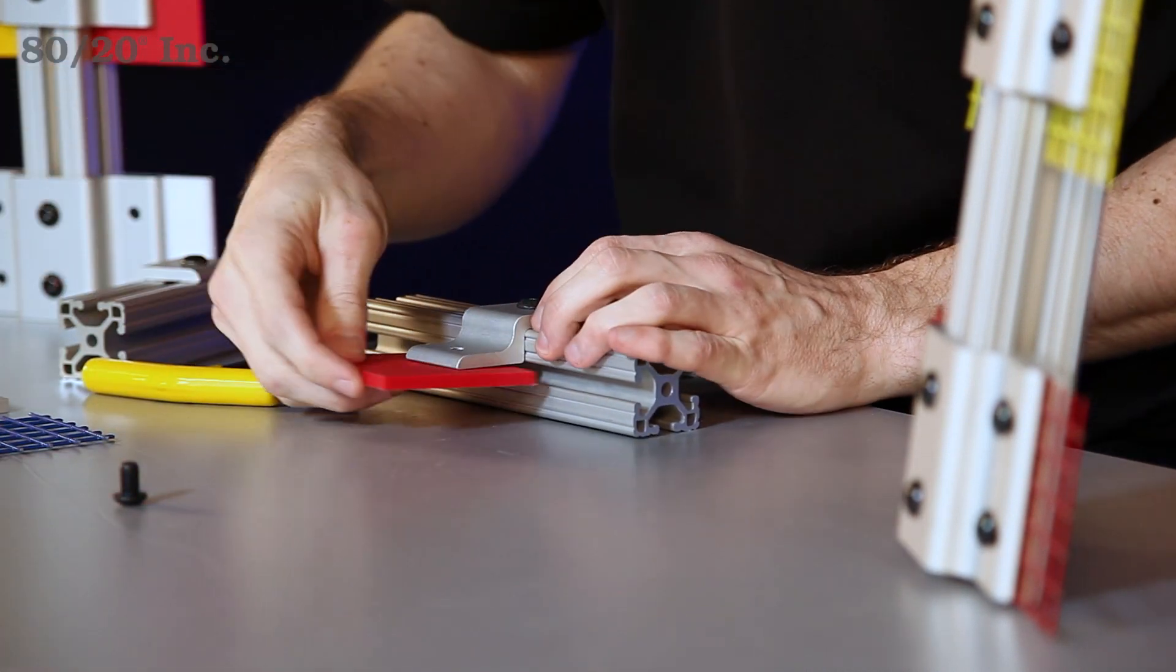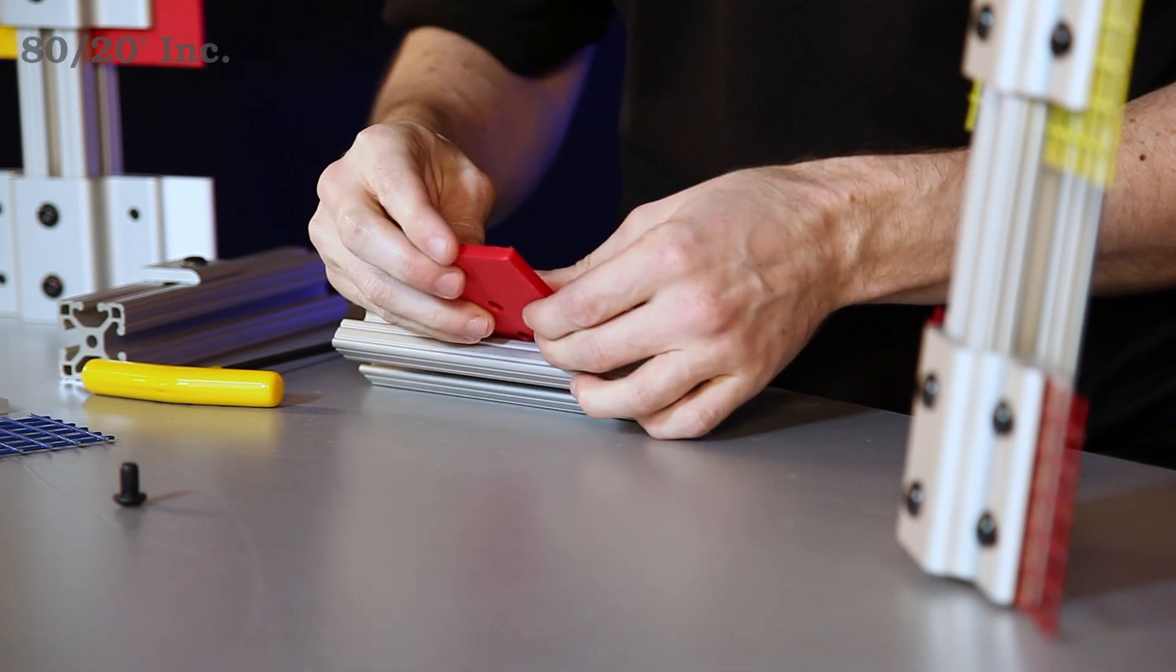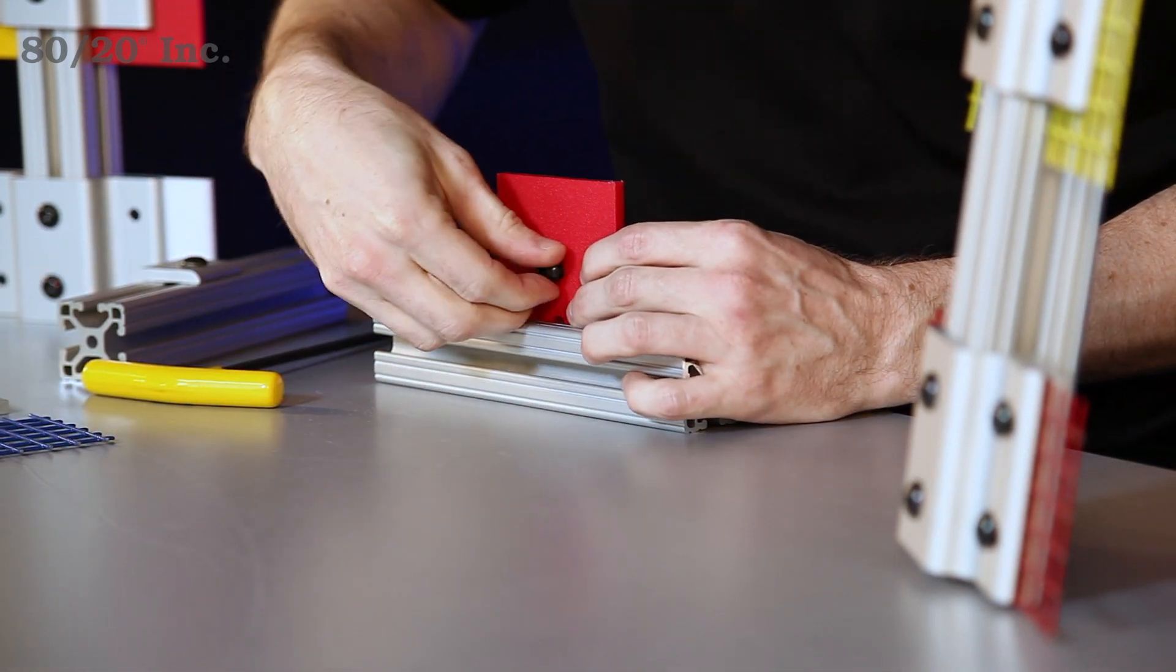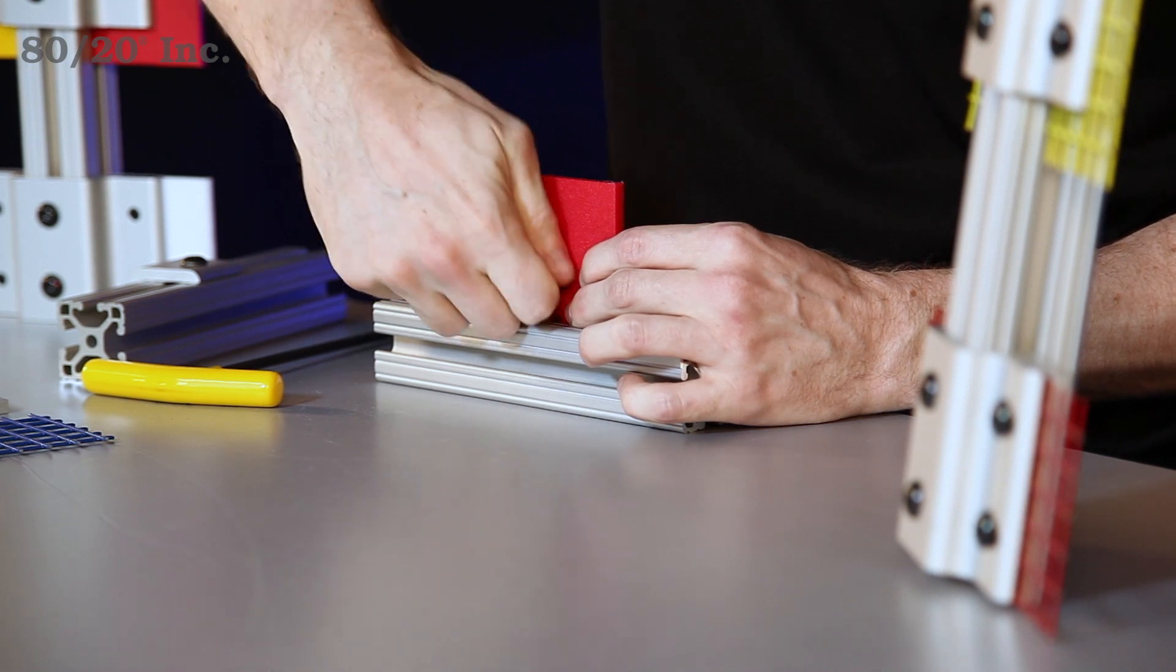Next you'll grab your panel and slide it into the open T-slot. You'll take your other bolt and go on the other side of the panel and tighten that through to the retainer.